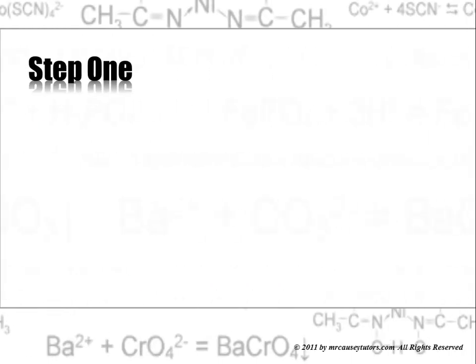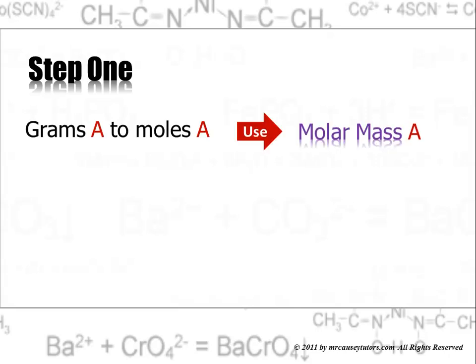Step one in doing a stoichiometry problem is, first of all, what you need to do is write a good equation. Get your chemical equation written and balanced. And then you want to take and you're going to change your grams of one substance to moles of that substance using the molar mass.